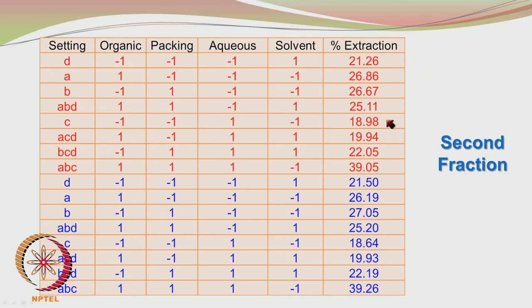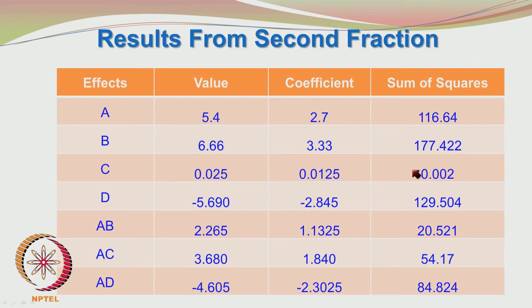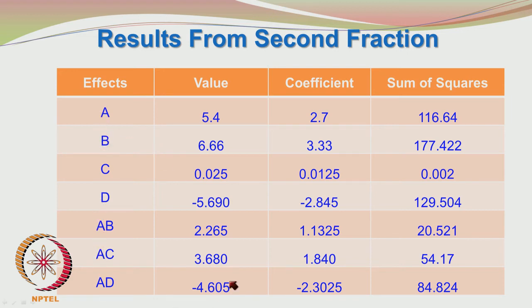You are having the second fraction results reported here. By now you should be confident to carry out these calculations on your own. What you do is find the values of the effects, then divide by 2 to get the coefficients, and also find the sum of squares. In the second fraction you have A, B, C, D, AB, AC, AD — you do not have 3-factor interactions because they are aliased with the main factor interactions, and the 2-factor interactions are aliased with the other 2-factor interactions.